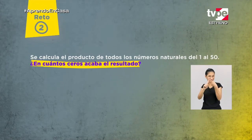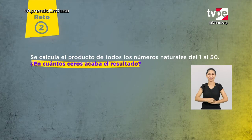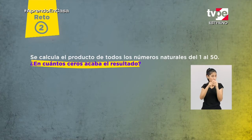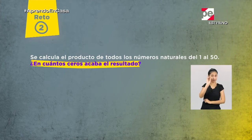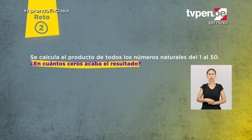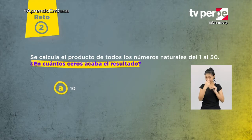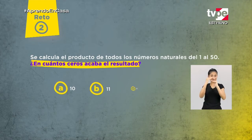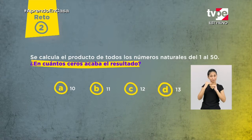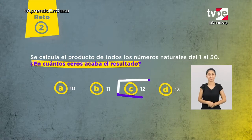Reto 2: Se calcula el producto de todos los números naturales del 1 al 50. ¿En cuántos ceros acaba el resultado? A) 10, B) 11, C) 12, D) 13.